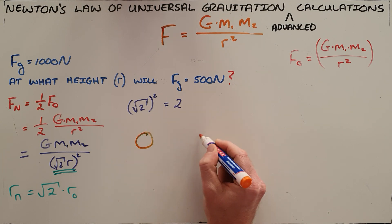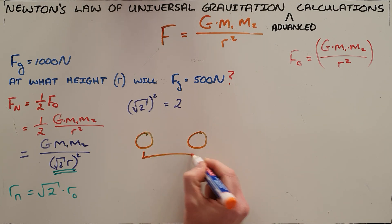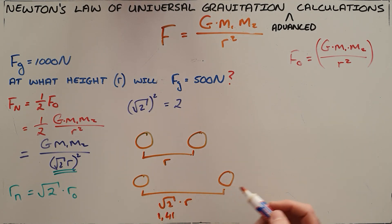So what this tells us is that the original objects were a distance of r apart, and the new separation is now a distance of r times √2. We know that √2 is 1.41, so basically the new distance is 1.41 times bigger.